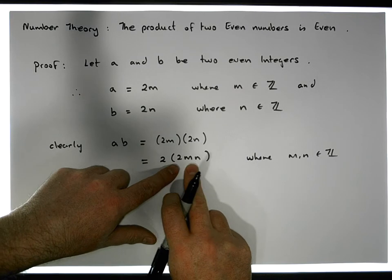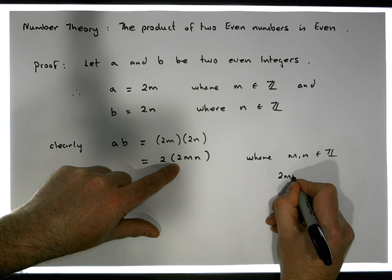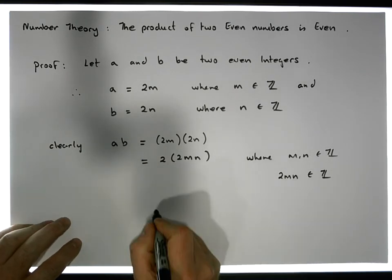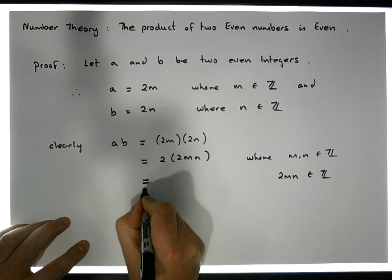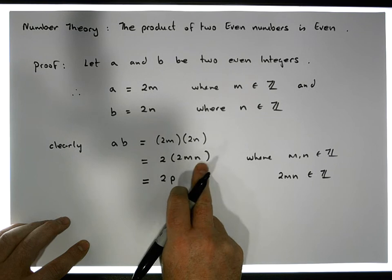Now, 2 times M times N - 2 times MN is also an element of the integers. So let that particular number equal P. What we end up with is that this is equal to 2 times some number P, where P is the number 2MN.